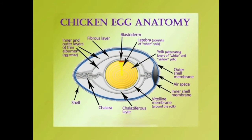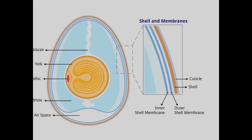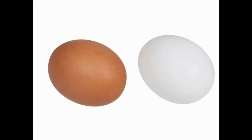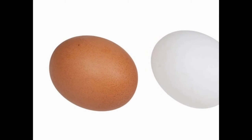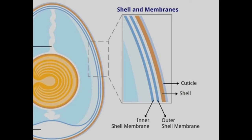Let us now look at the structure of the hen's egg. The egg is surrounded by the shell which, along with two membranes - the outer shell membrane and the inner shell membrane - helps to protect the inner contents of the egg. The shell is porous and contains thousands of small holes which allow gases to pass in and out of the egg. The shell is surrounded by a thin gelatinous layer known as a cuticle or bloom, and this helps to prevent entry of microorganisms into the egg.